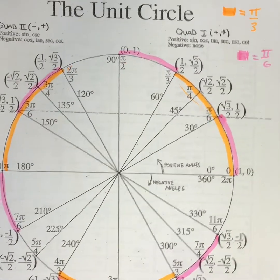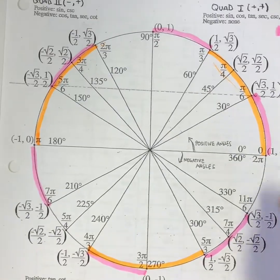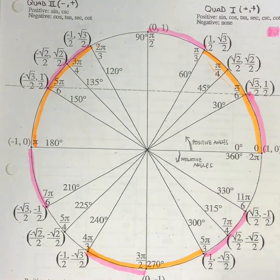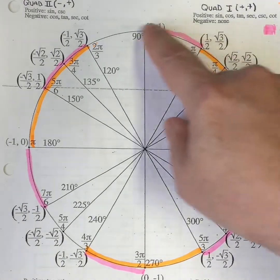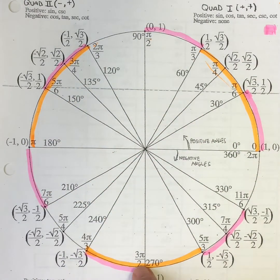So, now, if we need something like 15 π over 6. If we're looking for 15 π over 6, we can count them. One, two, three, four, five, six, seven, eight, nine,